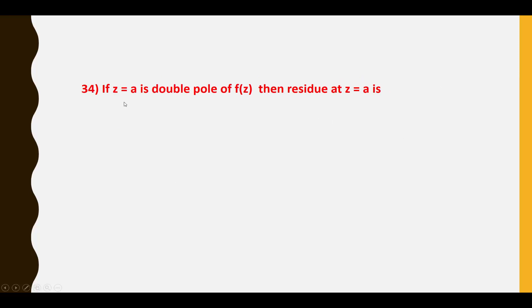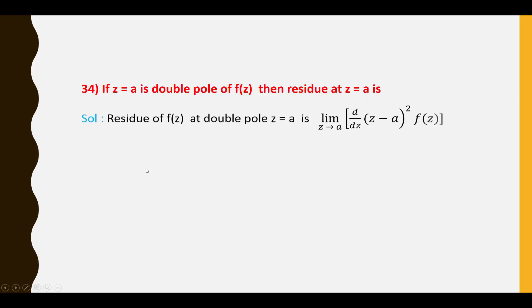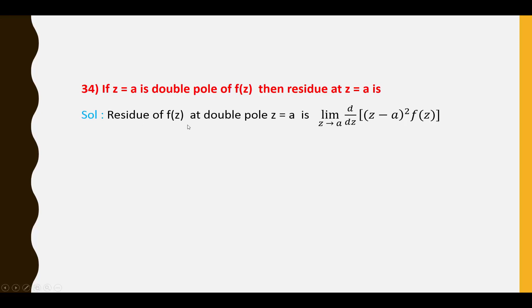Thirty-fourth question: If Z = a is a double pole of F(Z), then the residue at Z = a is: Res[F(Z), a] = lim(Z→a) d/dZ [(Z − a)²·F(Z)].